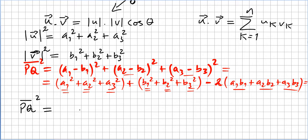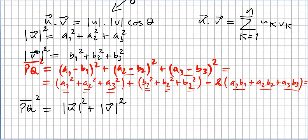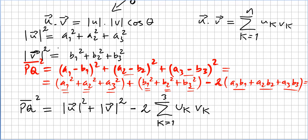So PQ squared gives us: from the squared terms, a1^2 + a2^2 + a3^2, which is nothing else but |u|^2; plus b1^2 + b2^2 + b3^2, which is |v|^2; and then minus 2 times the sum from k=1 to 3 of u_k * v_k — those being the components of the two vectors.